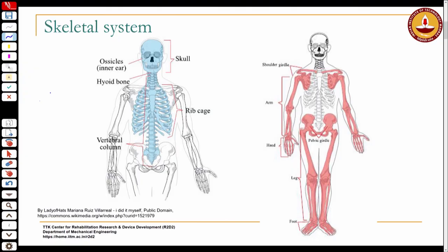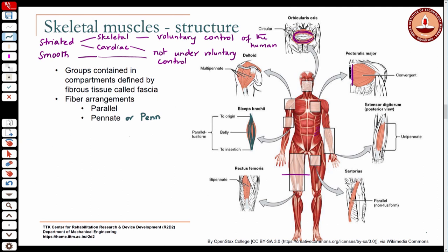We call this - we were looking at the fiber arrangements in the muscles. The two broad classifications are the parallel and the penniform or pennate arrangement, also known as penniform arrangements. At this macroscopic level, when we are talking about the muscle, these fibers are actually called fascicles. We will see why when we look at the structure of the muscle fiber, because we will go into the fascicles and then into that.